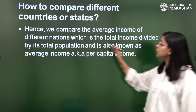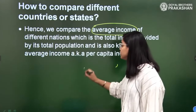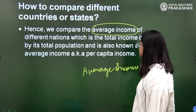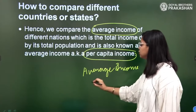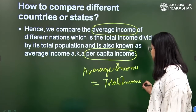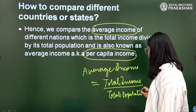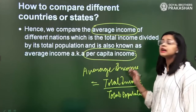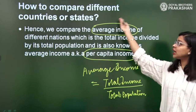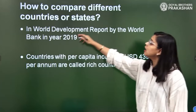To address this, we take into account the average income, which is also called per capita income. Average income, or per capita income, is equal to total income of the country divided by total population. So total income upon total population gives the average income of the whole country, which is a good measure to judge or compare different states or countries and whether they are growing or not.